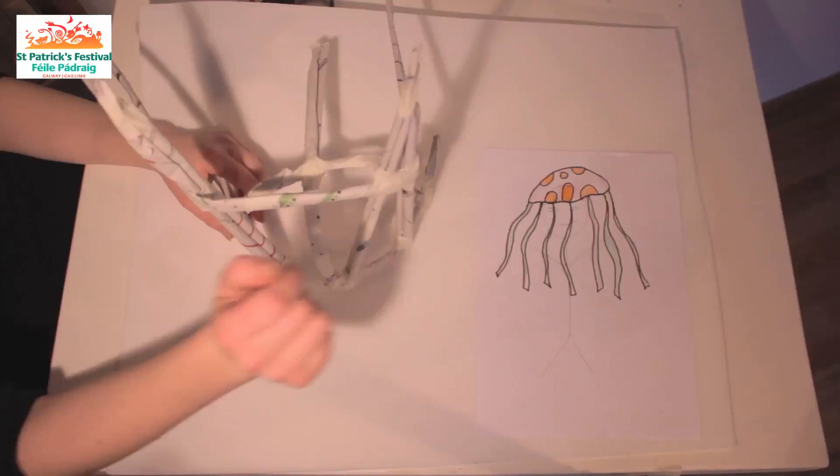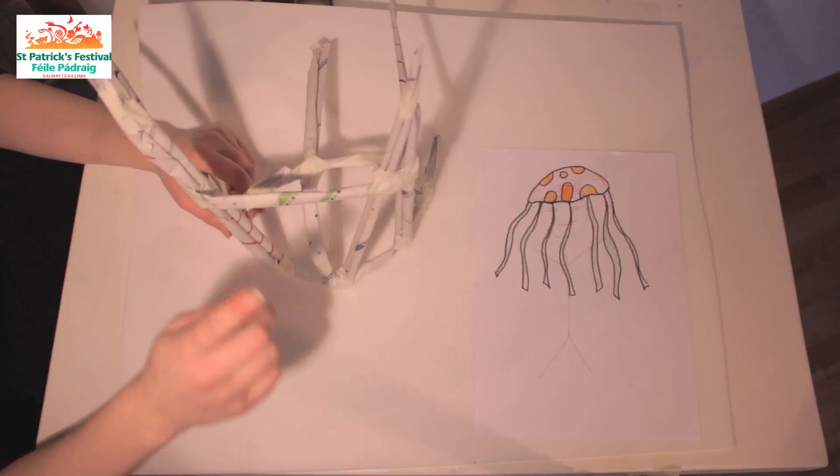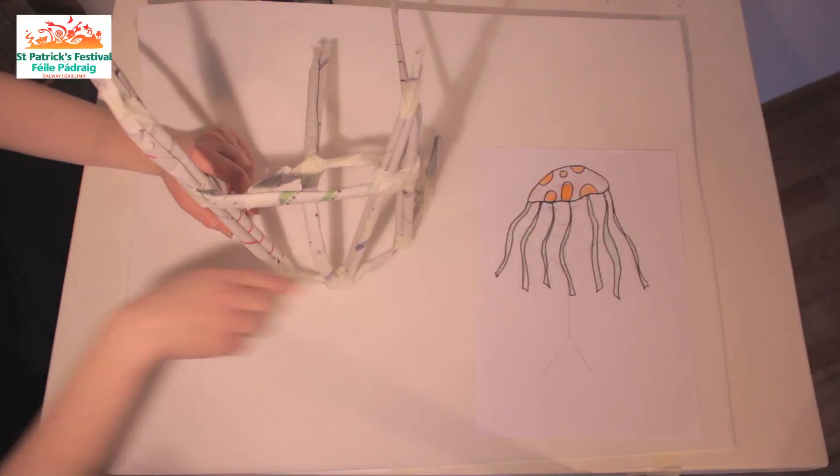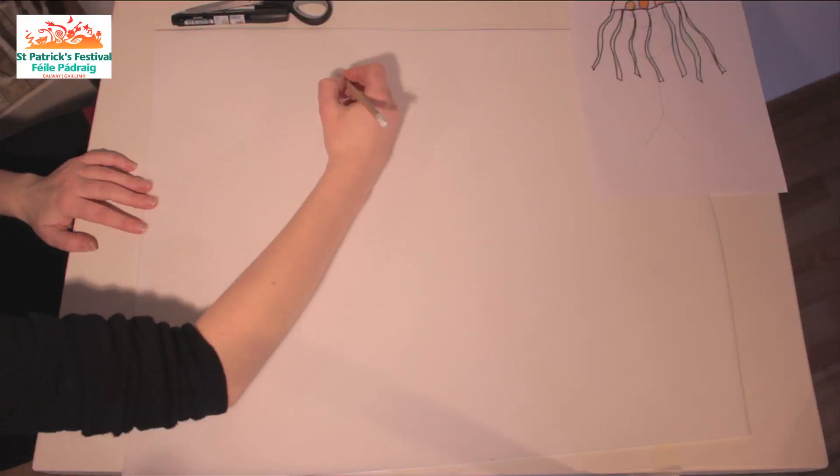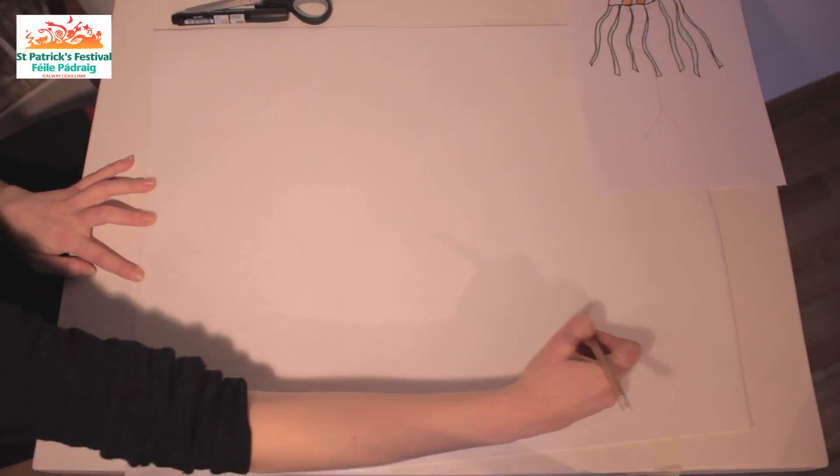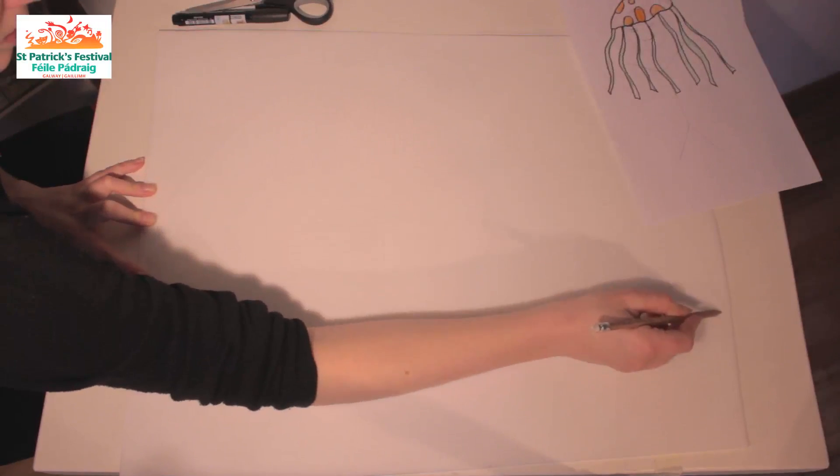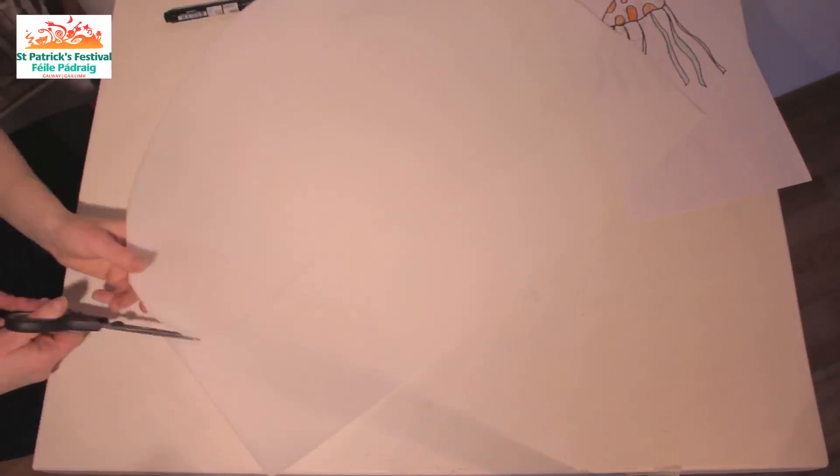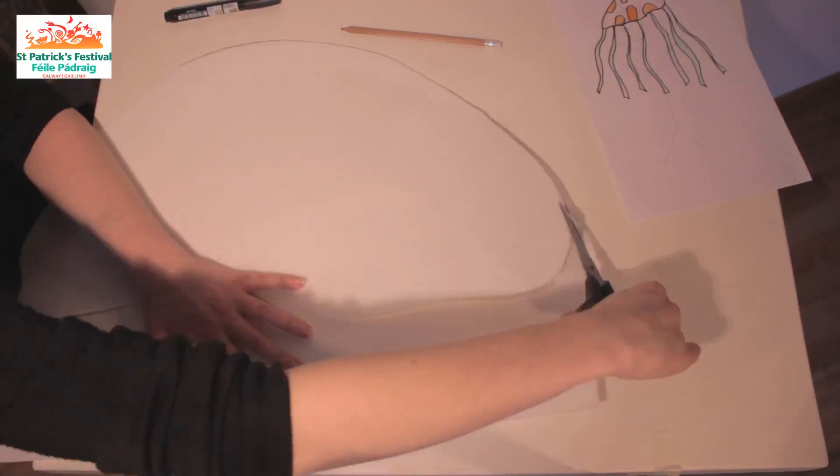So, you find out what color you want. And you get your sheet of plastizote. Now, we have this, this and this. So, we want, the first thing we want is a shape. A jellyfish shape. And we want it to be really big. So, we're going to go like this.